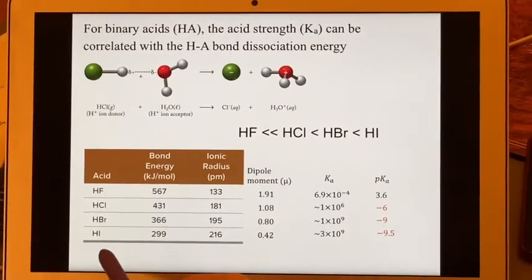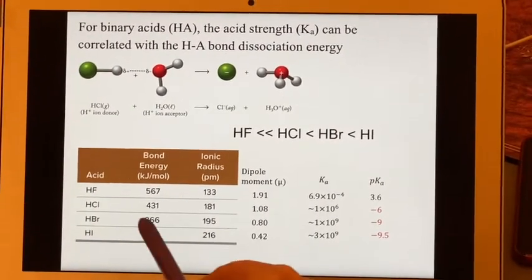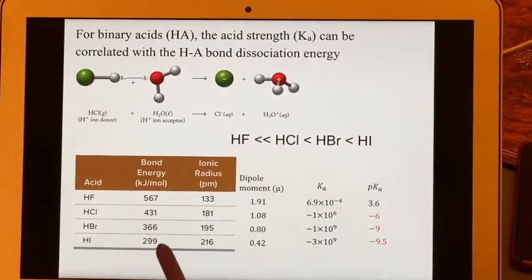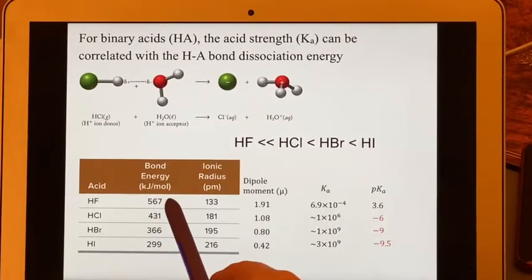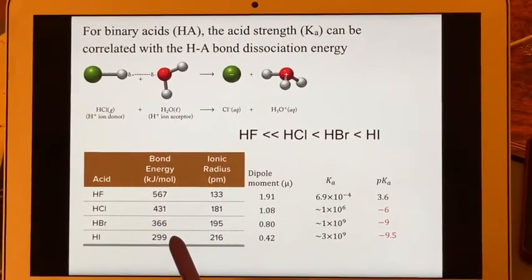Those are all halogens that it's attached to. And then they can show you that the bond energy goes from a high and then lower and lower and lowest.